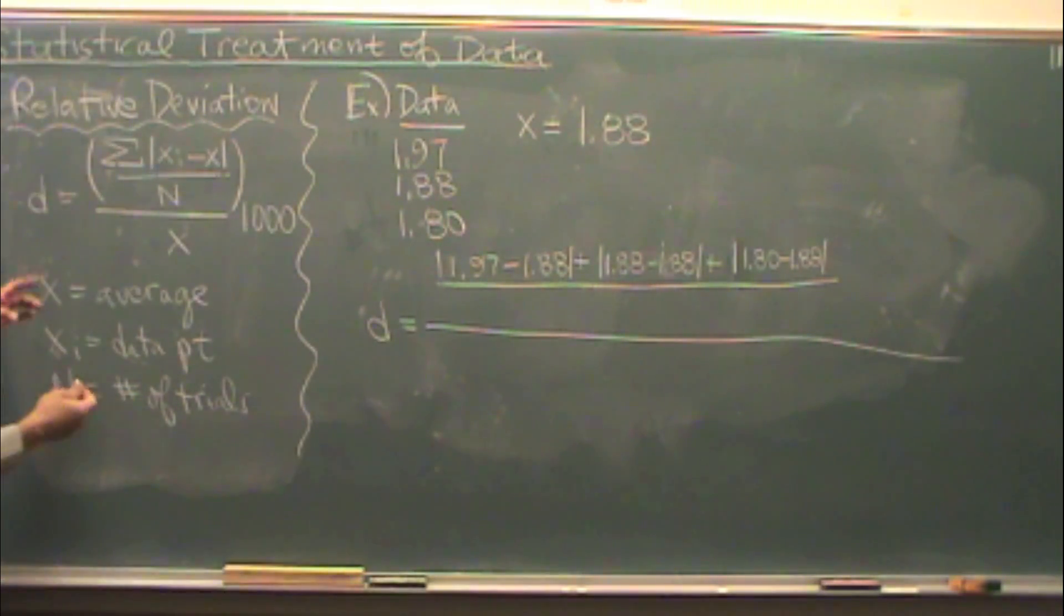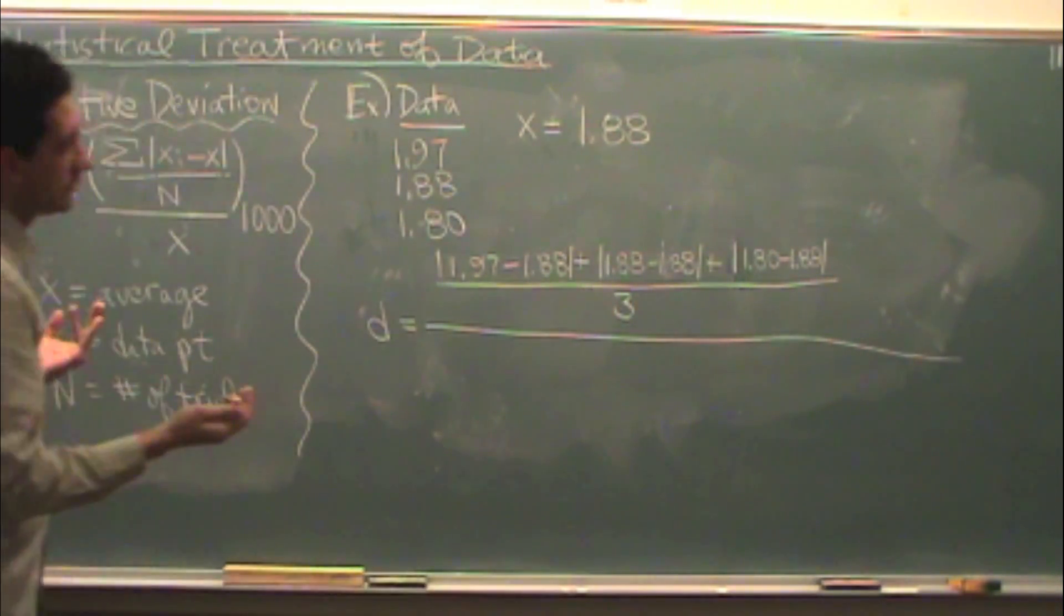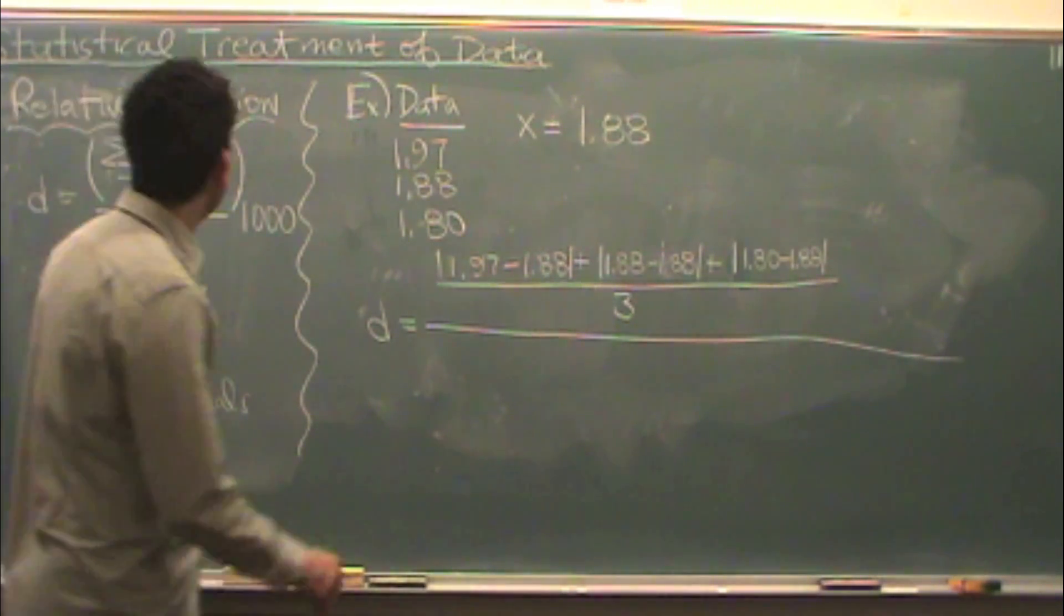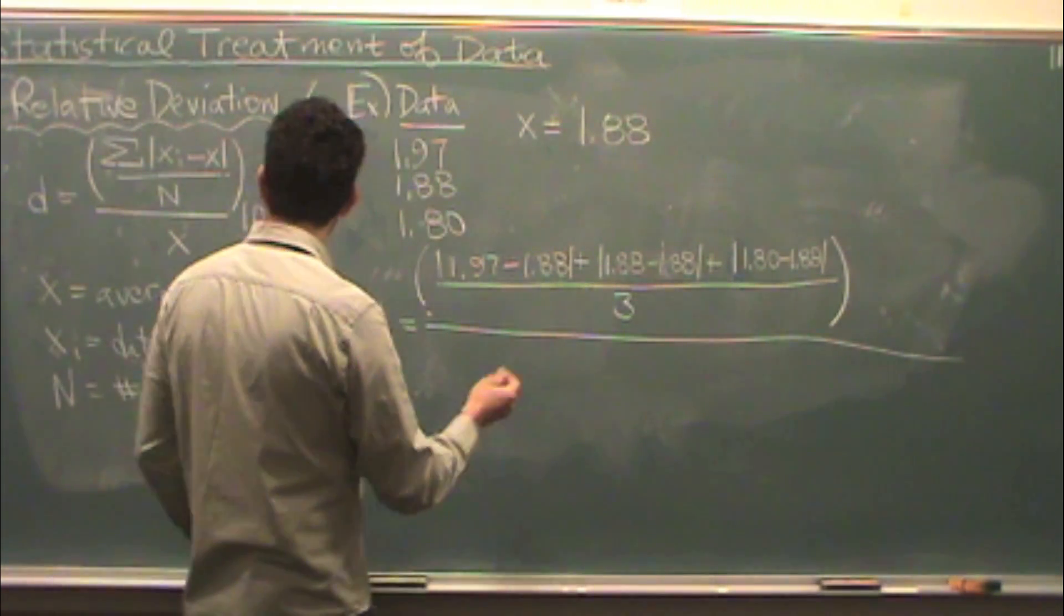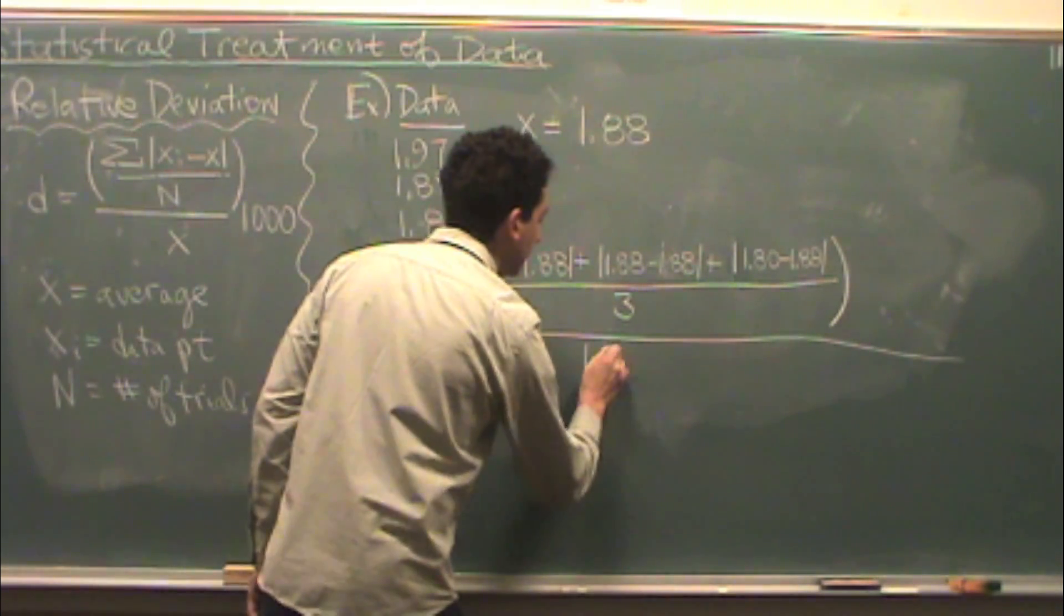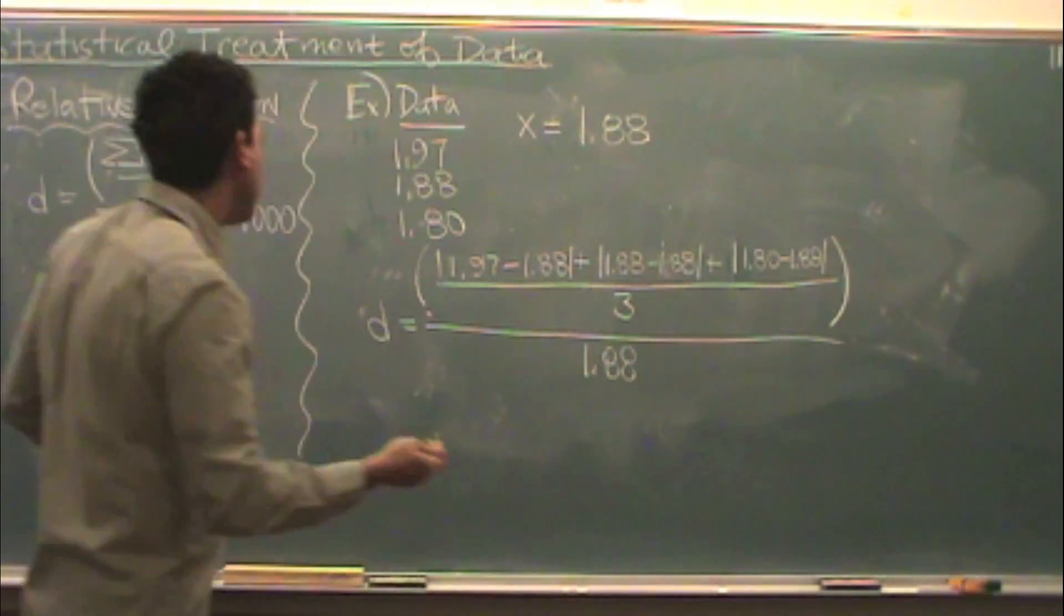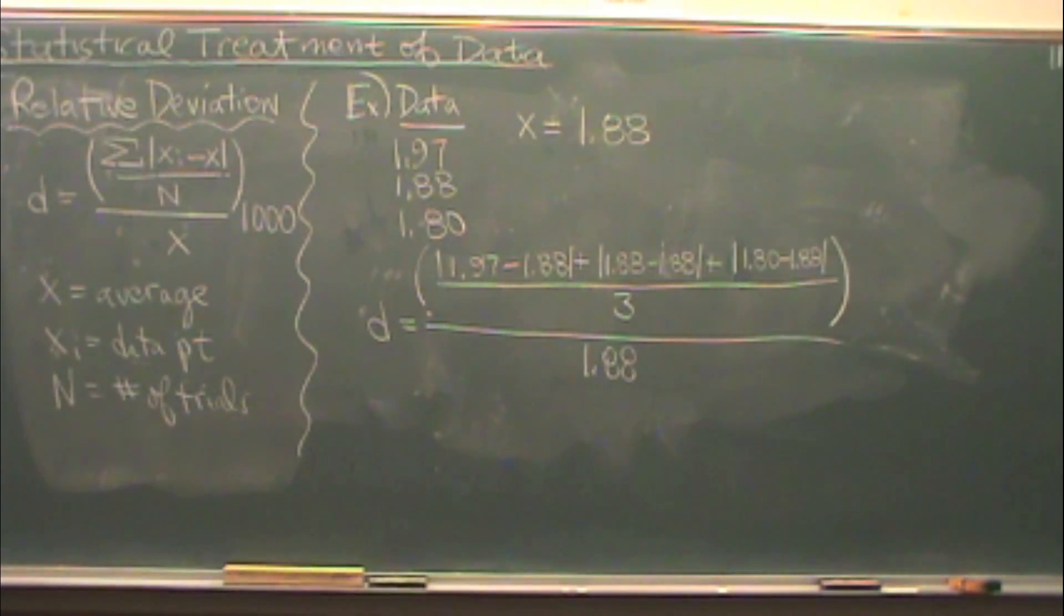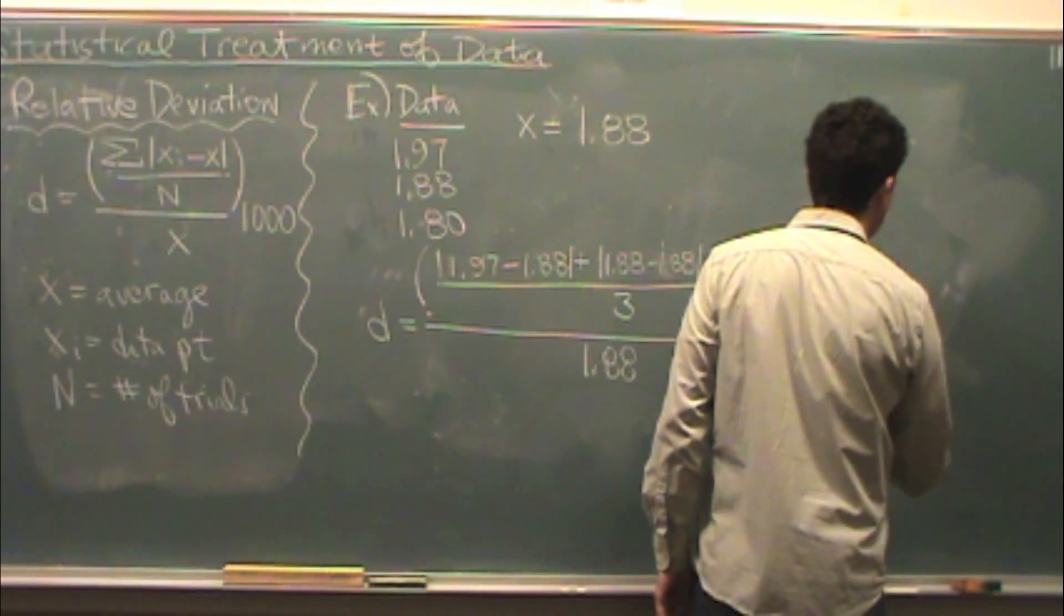I divide that whole quantity by n, the number of trials, in this case three trials because there's three sets of data points. I divide this whole quantity by x, which is the average, 1.88 in this case. And then, to put it in this case, what's called parts per trillion, just because it can often be a small number, we multiply by 1,000.